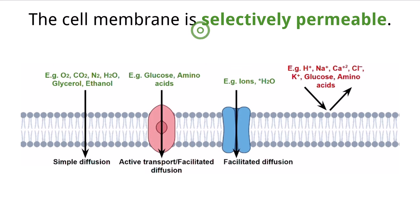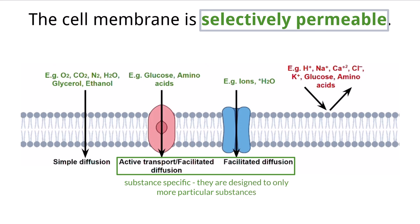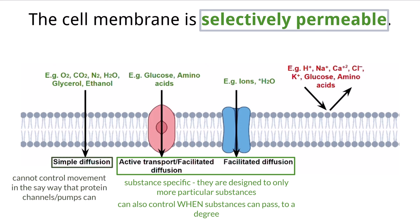The cell membrane is selectively permeable, and this is only possible because of facilitated diffusion and active transport. Both are substance specific, meaning they are designed to only let specific substances pass through, which can also be at specific times. The calcium channel only lets calcium ions through; the sodium-potassium pump only has the structure to move those two ions. It is the conformation of these proteins — whether they are open or closed — that allows the membrane to be selective. Contrasting this with simple diffusion, the cell does not have the ability to control the movement of specific substances; molecules like oxygen and carbon dioxide can move freely based on their concentration gradients at any time.